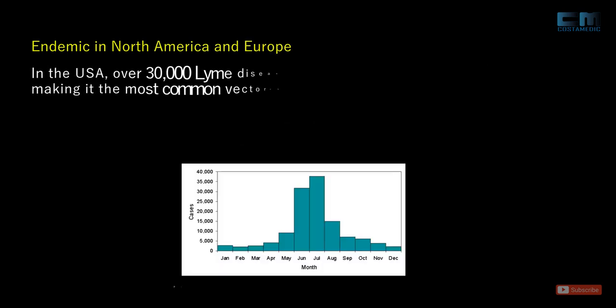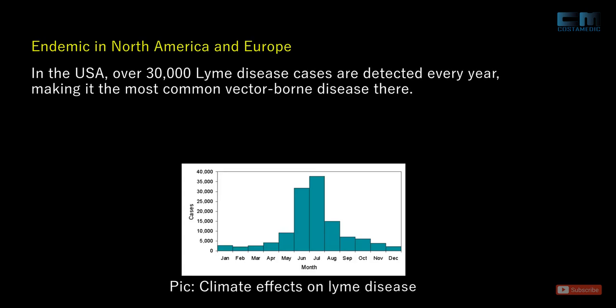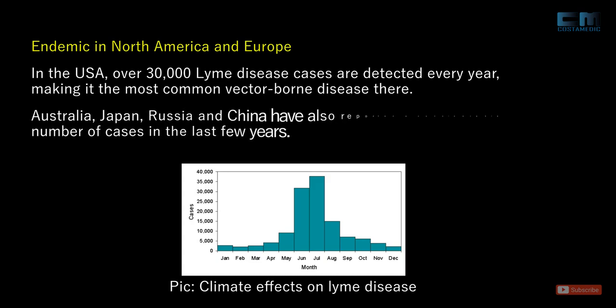Lyme disease is endemic in North America and Europe. In the USA, over 30,000 Lyme disease cases are detected every year, making it the most common vector-borne disease there. Australia, Japan, Russia and China have also reported a considerable number of cases in the last few years.